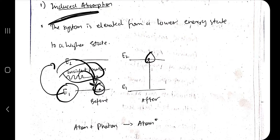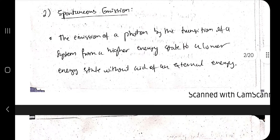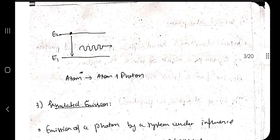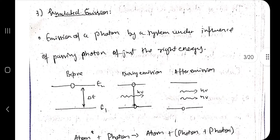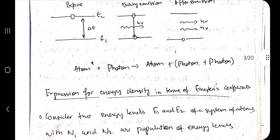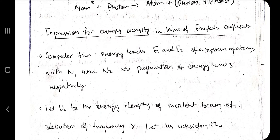In spontaneous emission, a photon is emitted by the transition of a system from a higher energy state to a lower energy state without the aid of external energy — so when an atom moves from higher to lower energy, it emits some energy. The third interaction, stimulated emission, is when another incoming photon causes an atom already in an excited state to emit energy and return to the normal state.